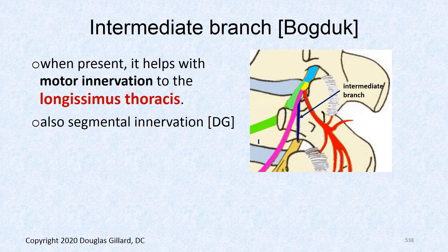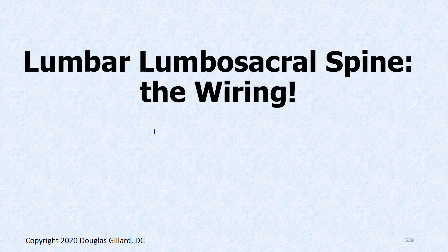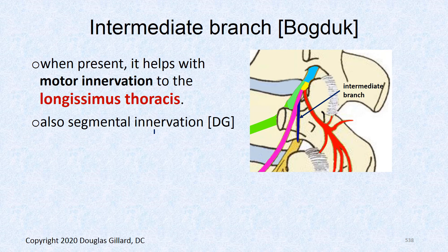An intermediate branch is not always present; when present, it usually arises from either the lateral or medial branch of the posterior ramus and helps provide motor innervation to the longissimus thoracis in a segmental fashion.